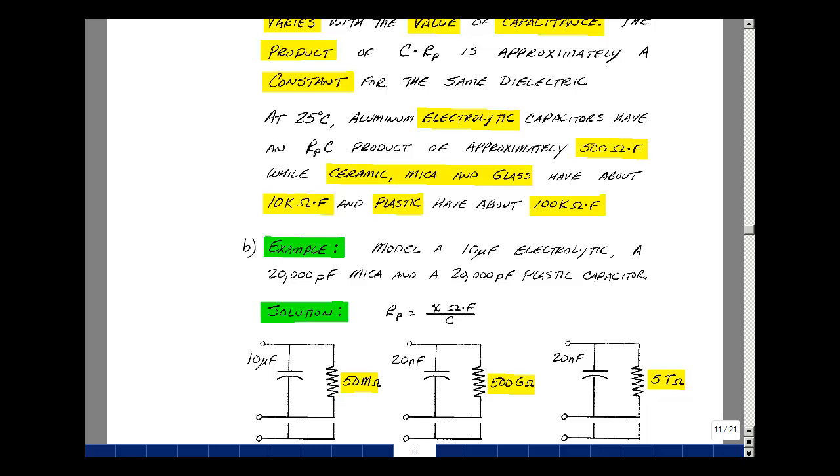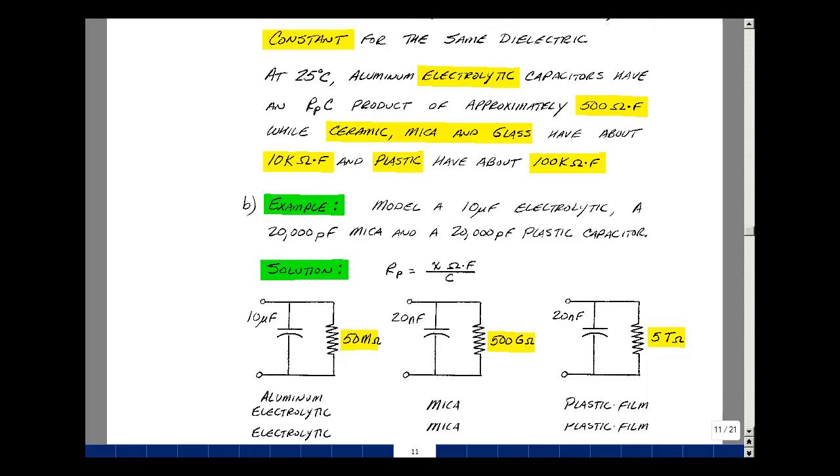We could take a physical capacitor and model it with an ideal resistance and an ideal capacitance. Let's do a couple examples here. Suppose they have a 10-microfarad electrolytic capacitor. Using the value here of 500 ohm-farads, dividing that by C, we then get the value of the resistance. In this case, it's 50 million ohms. Take a mica capacitor, 20,000 picofarads or 20 nanofarads. Using the value of 10,000 ohm-farads, and dividing that by the 20 nanofarads, you get 500 gigaohms. And lastly, for a plastic dielectric, 20,000 picofarads, 20 nanofarads. Taking the value here of 100,000 divided by the capacitance value, we'd have a factor of 10 more, so 5 teraohms. Very large resistances, but finite values.